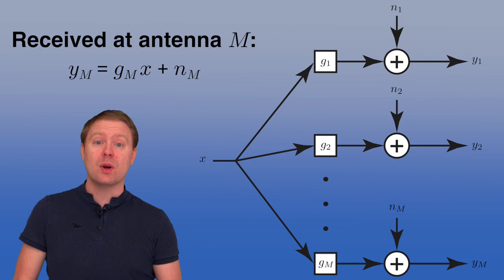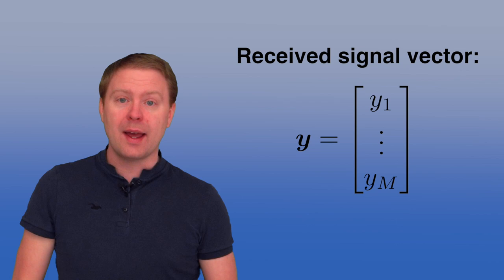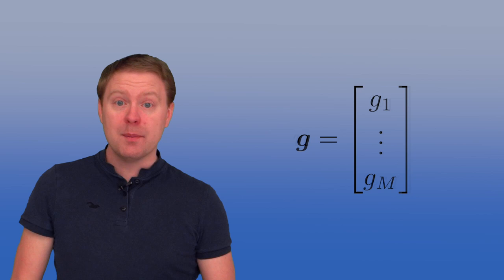It is convenient to represent the channel using vectors. We create a received signal vector Y containing Y1 to YM — it is an M-dimensional vector. We create a channel vector G with G1 to GM, and a noise vector N with N1 to NM. In that way, the received signal vector Y can be written as G times X plus N.